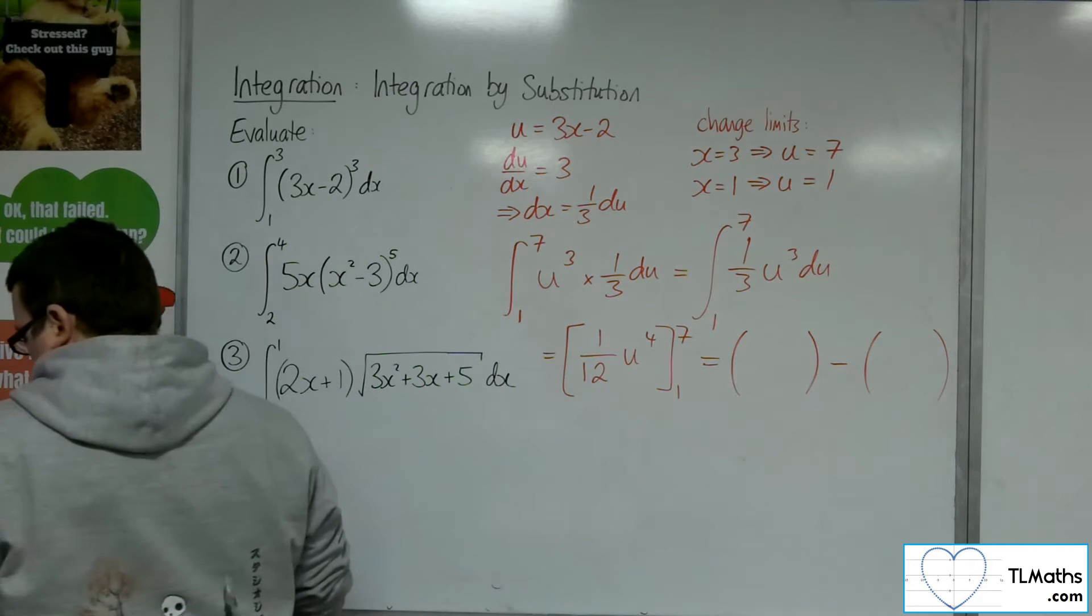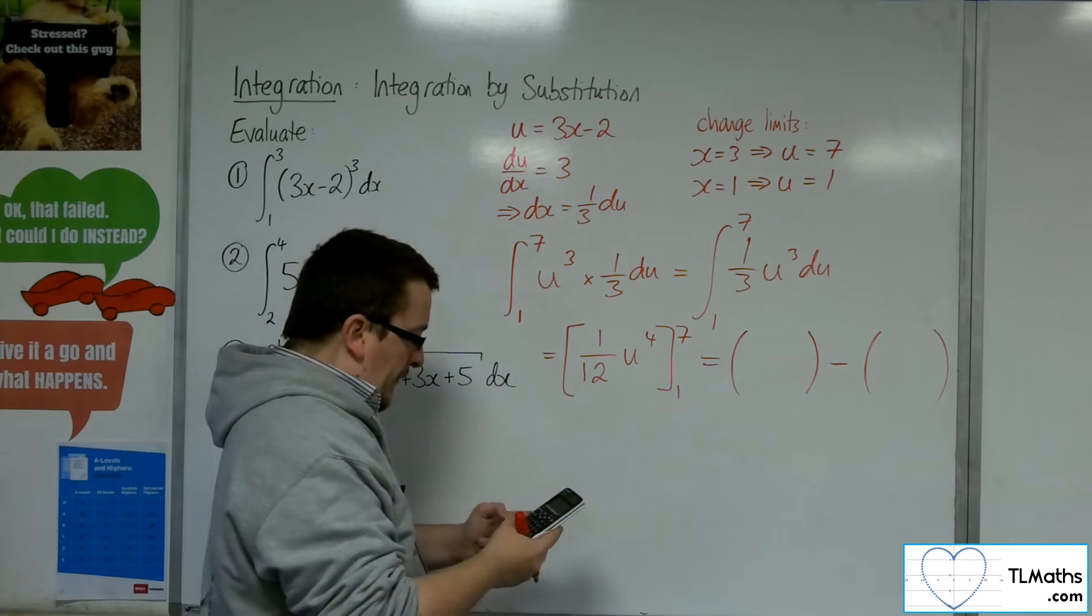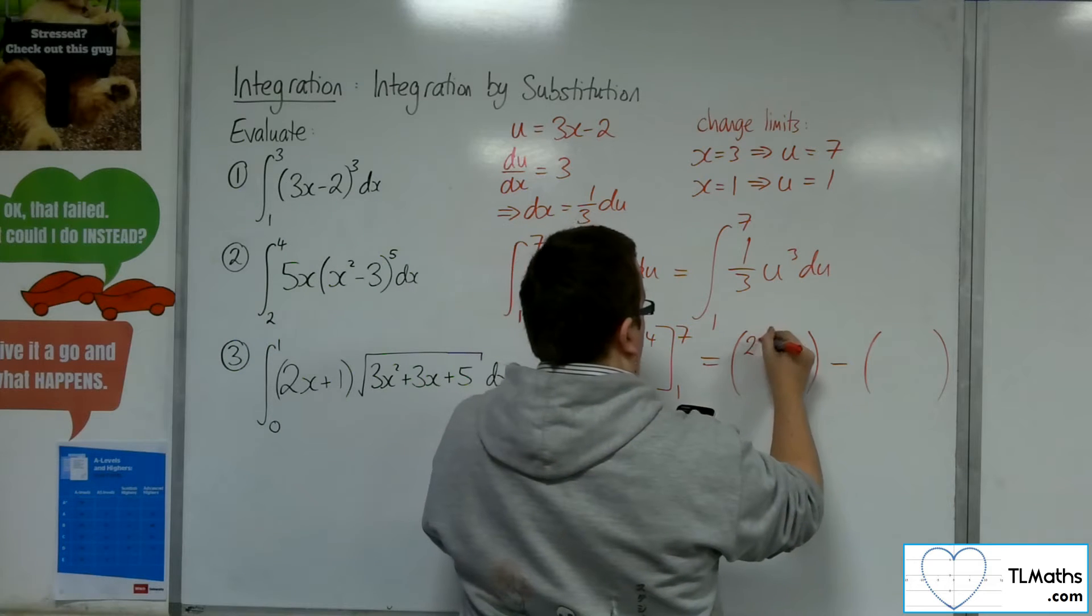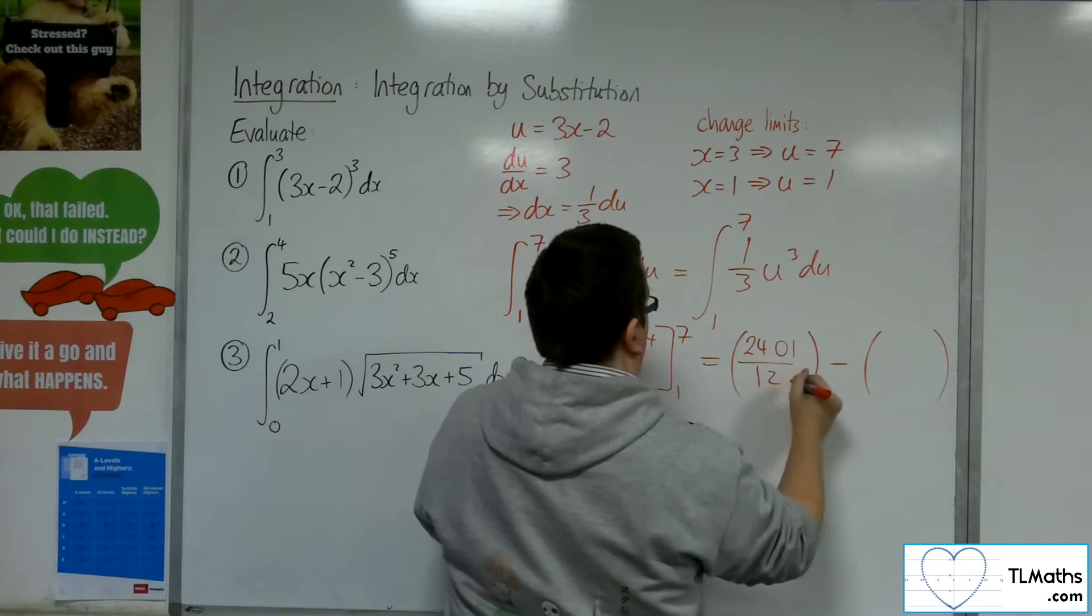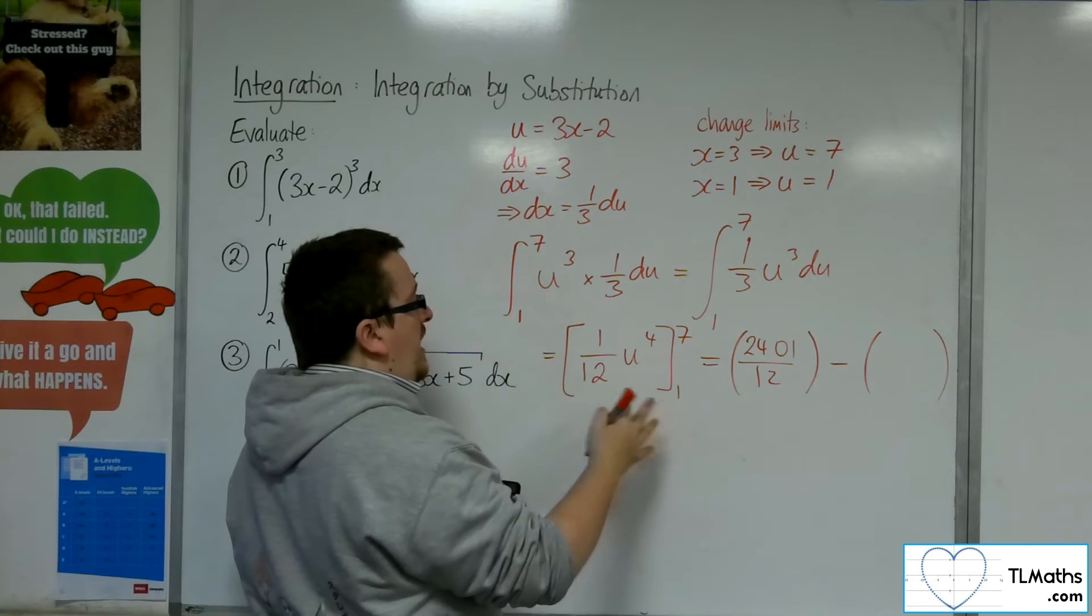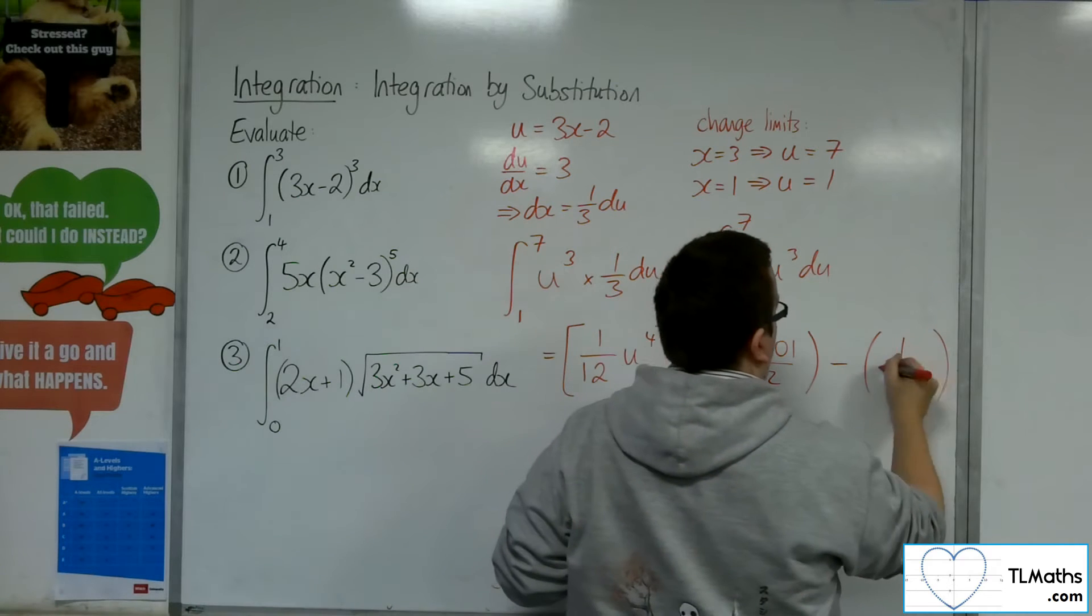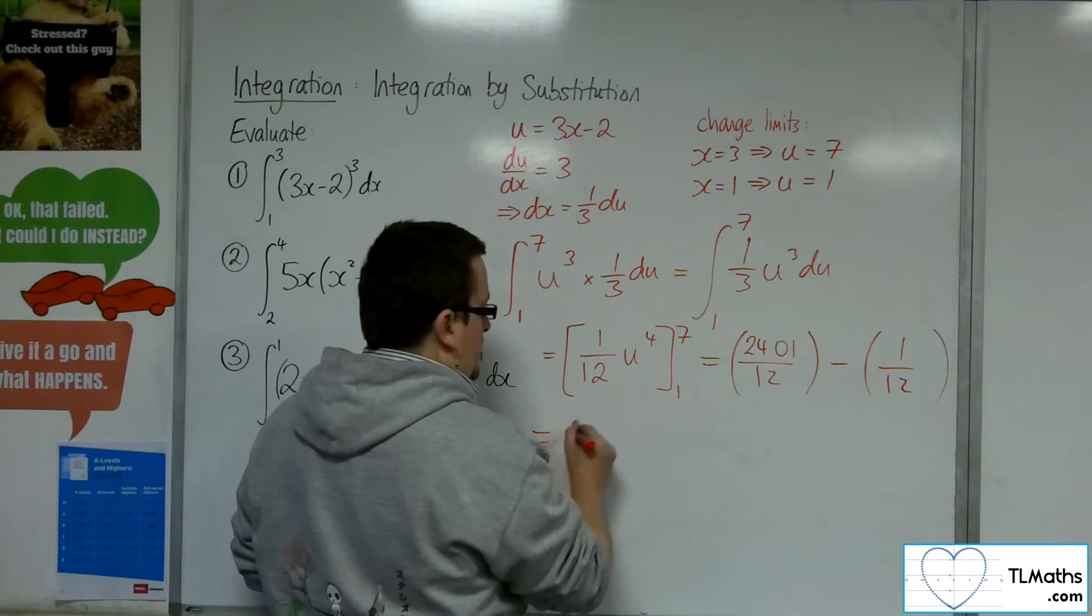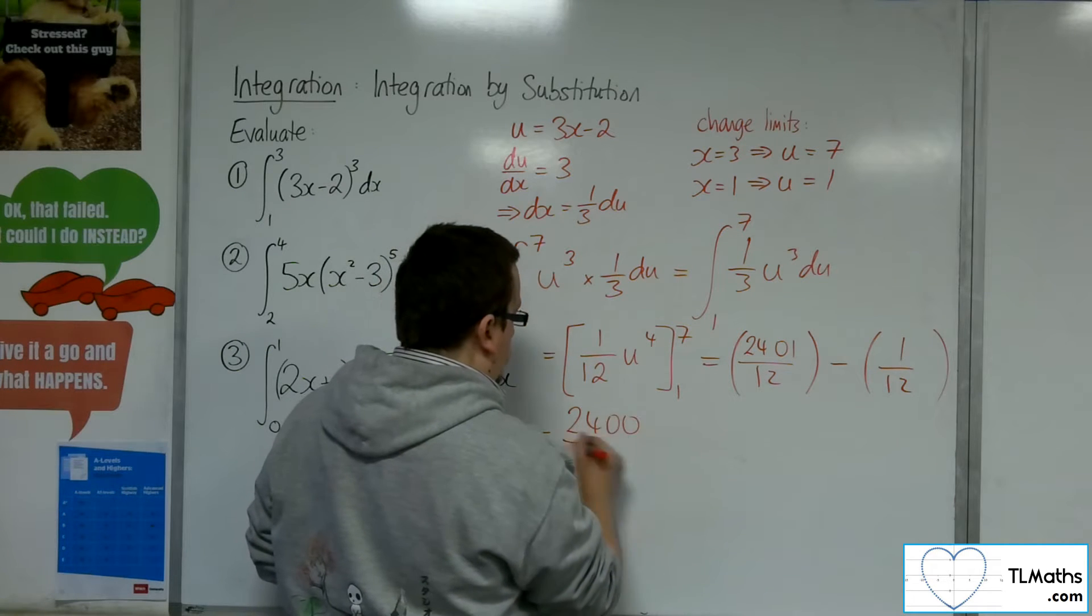So 7 to the power of 4 is 2,401, and that's going to be over 12. And then I'm taking away 1 over 12. Well, that's just going to be 2,400 over 12.